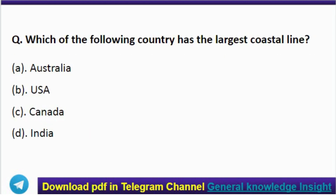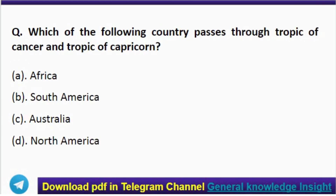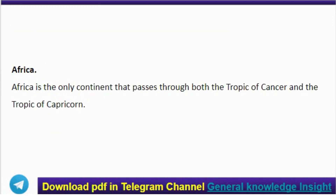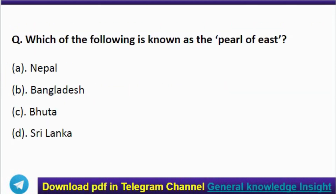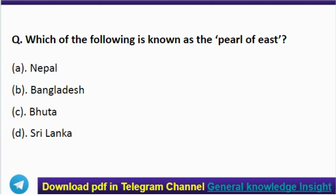Next question: which of the following countries has the largest coastline? The correct answer is option C — Canada. Next question: which of the following countries does the Tropic of Cancer and Tropic of Capricorn both pass through? The correct answer is option A — Africa. And here is the last question: which of the following is known as the Pearl of the East? The correct answer is option D — Sri Lanka.